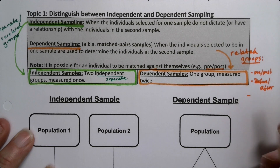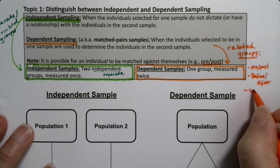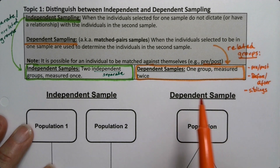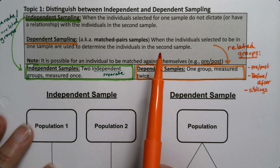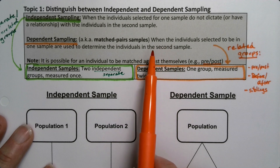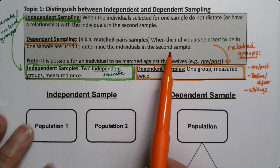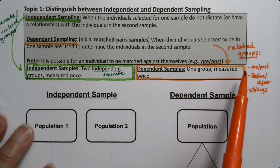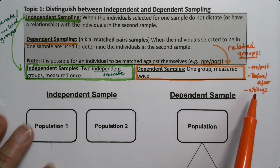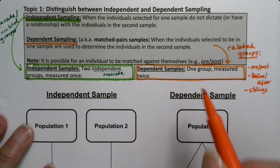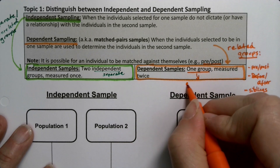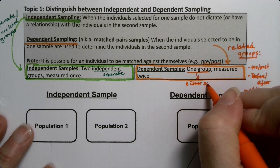But it could also be siblings — a related group. So if you get the older sibling and measure their reaction time, then the younger sibling's sample is automatically dictated because they're related. It's one group of people being measured twice; it's just that the people are related to each other. That's what makes them one group. So by one group what we mean is they're either the same people or they're related people.